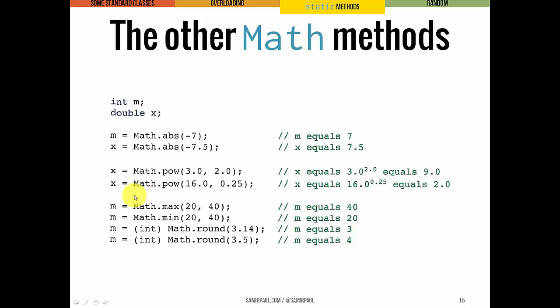The max method returns the maximum of two numbers that we pass in. So here we're passing in two integers, 20 and 40. And what gets stored into m is the larger of the two. So that's 40.